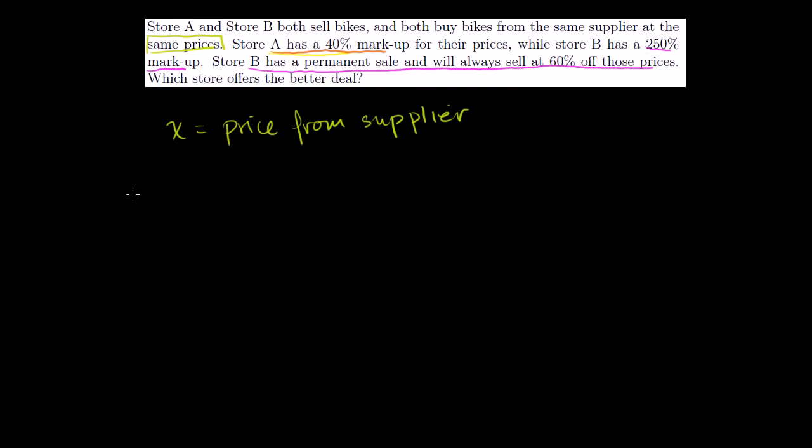Now let's do the scenario of store A. What does store A sell their bike for? They sell the bike for x plus 40% of x, which is equal to 1.4 times x. That's how much store A sells their bike for. Now store B is a little bit more interesting. So they have a 250% markup. So they claim to sell their bike for x plus 250%. That's the same thing as 2.5 times x. 100% markup would literally mean another x. This is 250%. And as we said, you can just divide by 100. You get 2.5, get rid of the percentage sign.